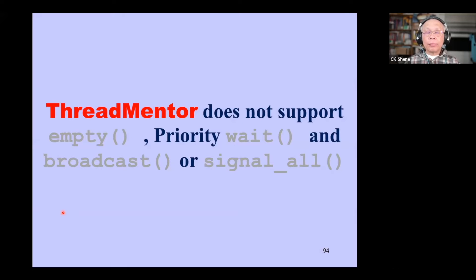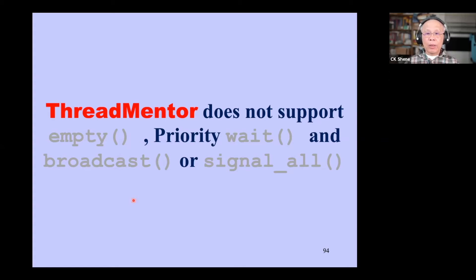First of all, let me remind you: Threatmentor does not support empty, priority wait, and broadcast signal all. In fact, the original version of Threatmentor has them all, but to make sure you know all the basics, we disabled all of these three extensions, in the hope that you are going to use signal and wait properly. Furthermore, not all systems support empty, priority wait, and broadcast, and this is the reason we disabled these three extensions in the current version of Threatmentor.